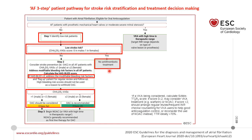If the CHA₂DS₂-VASc score is zero in males or one in females, there is no need for antithrombotic treatment. If the score is one in males or two in females, oral anticoagulant should be considered. If the score is two in males or three in females, oral anticoagulant is recommended. It is also important to calculate the HAS-BLED score to identify bleeding risk — a score of three or more indicates high risk of bleeding.